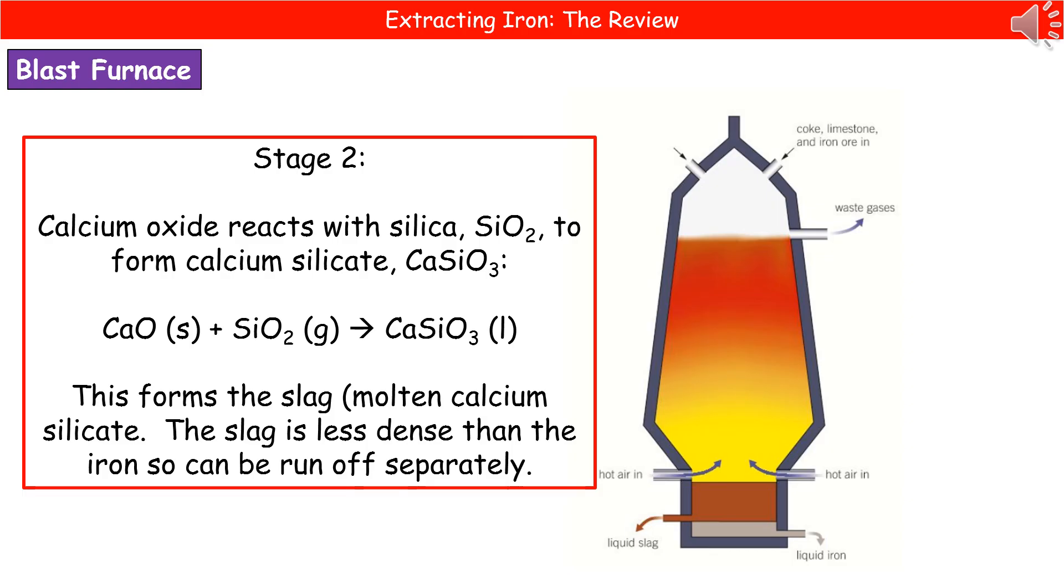That's really important when it comes to separating off these two liquids that we've generated at the bottom of our blast furnace, because the liquid iron being more dense is at the bottom, so we run that off at the base, and the liquid slag being less dense is run off just above that, so we've separated those two things.